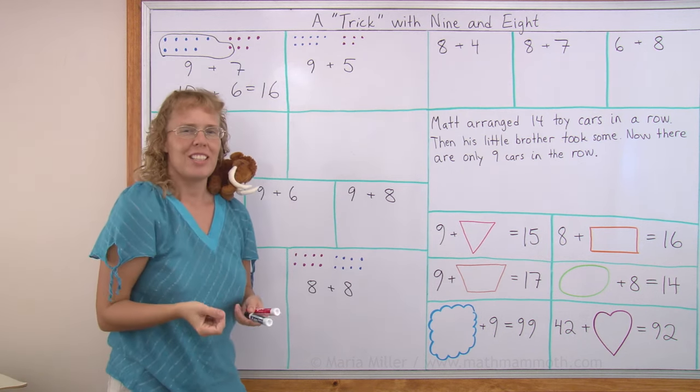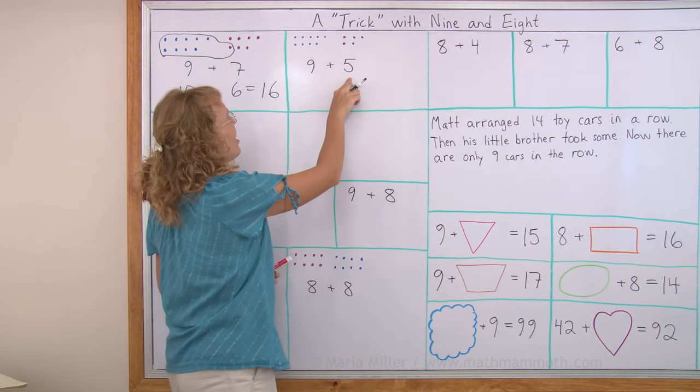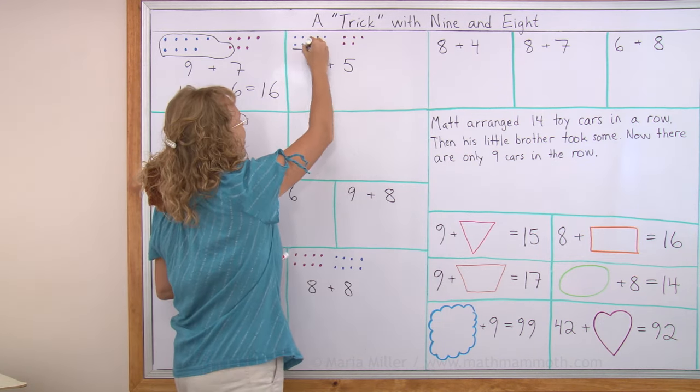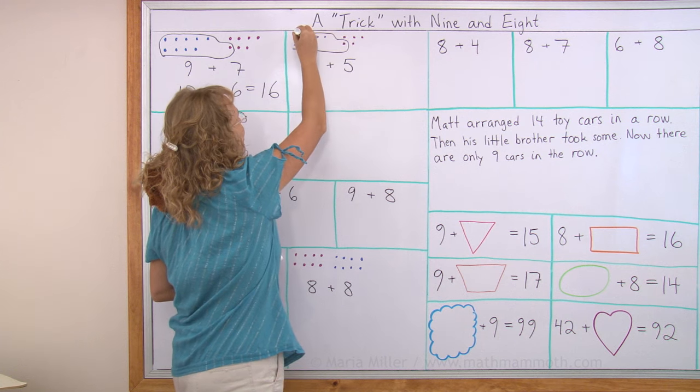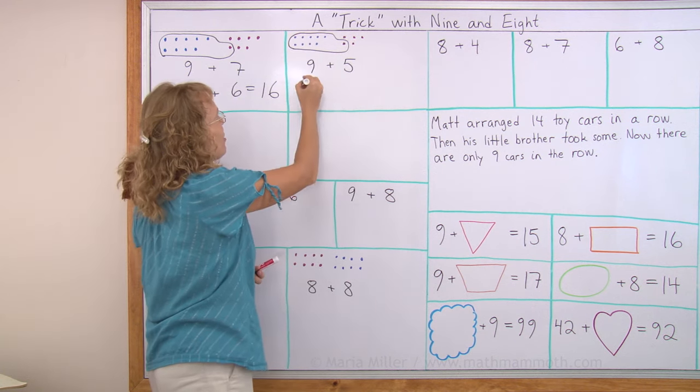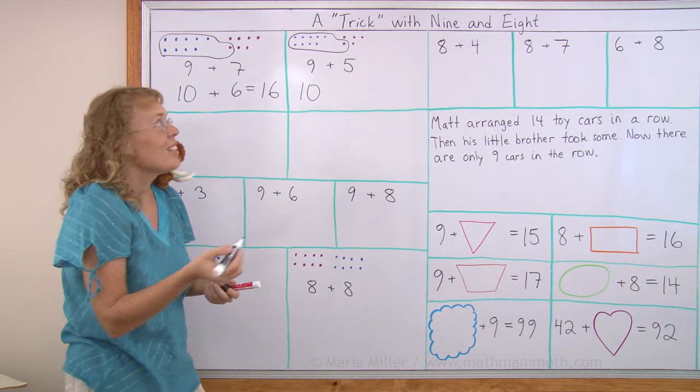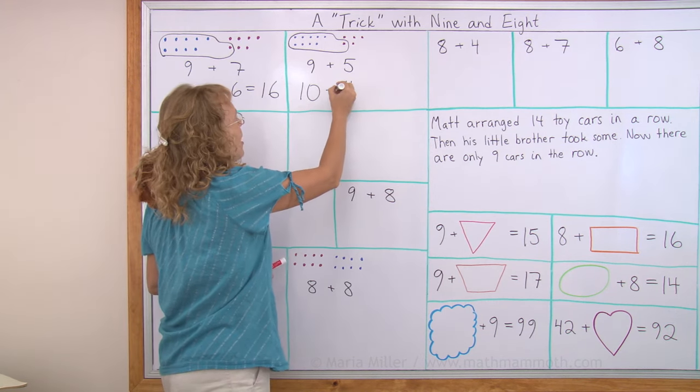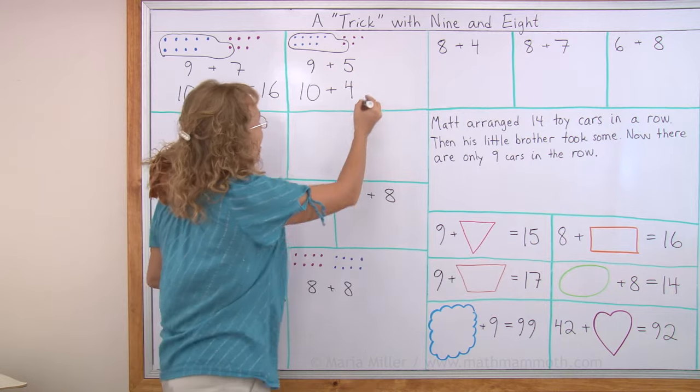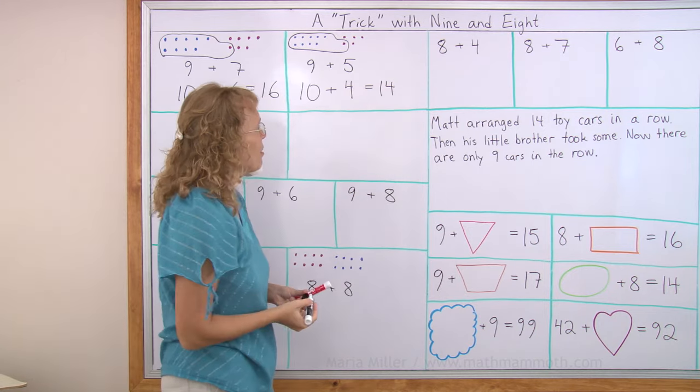Let's try it again. 9 and 5. Again, 9 wants to be 10. So 9 asks 5, can I have 1? And 5 says, OK, sure. And so 9 gets to be 10. But now 5 has only 4, right? 5 became 4. And then we add 10 plus 4, which is easy. It is 14. One of our teen numbers with 4.